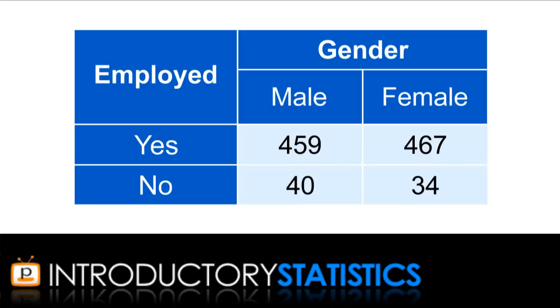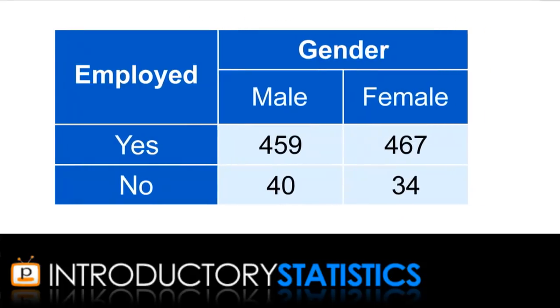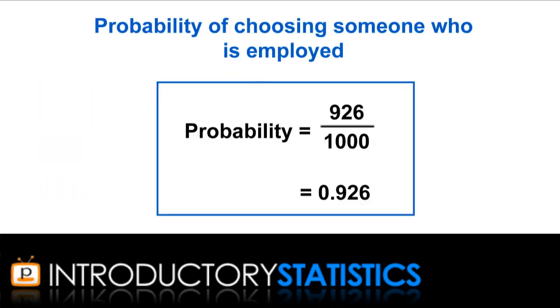And so you can use this to count the ways events could occur. For example, you can see directly that 459 of the thousand people surveyed were male and employed. So the probability that a random person in the survey is male and employed is 459 divided by a thousand, which is 0.459. But by adding up various columns and rows, you can determine other things. Like 926 of the thousand surveyed were employed. So the probability that a random person in the survey is employed is 0.926.